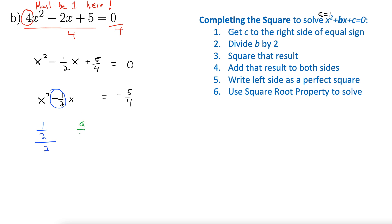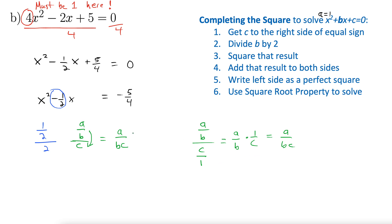Anytime you have a fraction over a single number — a over b all over c — you can just bump that fraction down a layer. This becomes a over bc. Why? Because this is really a over b divided by c over 1, which means we multiply by the reciprocal times 1 over c, giving us a over bc. So back to our example: when we divide 1 half by 2, we bump it down one level and this becomes 1 fourth. That takes care of step 2.